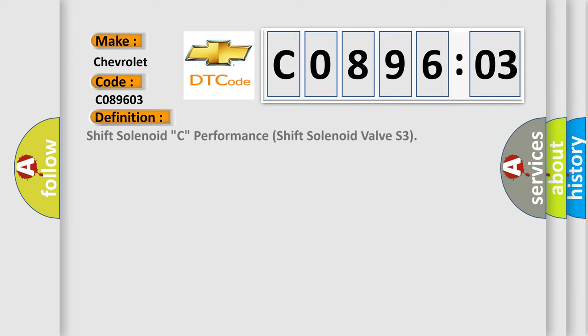The basic definition is: Shift solenoid C performance shift solenoid valve S3. And now this is a short description of this DTC code.